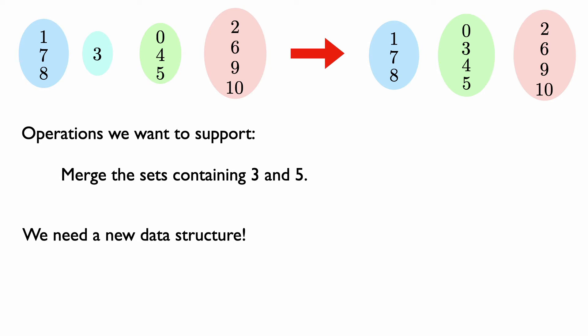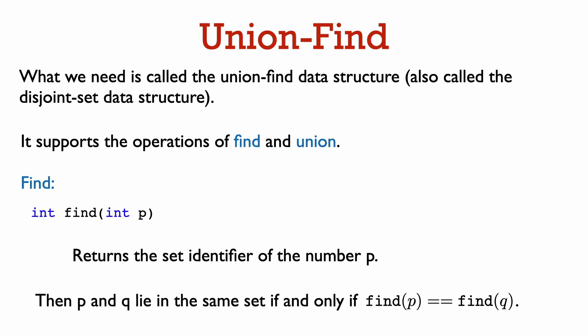What we need is a data structure to store the sets of the partition in order to support these two operations — determining if two numbers are in the same set, and merging the sets containing two numbers — efficiently. The data structure we need is called the union-find data structure, sometimes also called the disjoint set data structure. It supports the operations of find and union, which is exactly what we need for tasks two and three in Kruskal's algorithm.